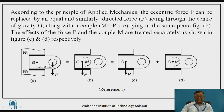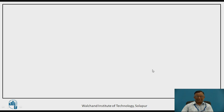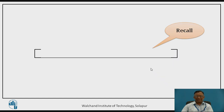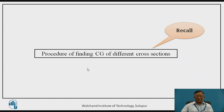This eccentric load is replaced by a direct load P and a couple M acting about the CG, and that is why two types of stresses are induced in the weld section — one because of the direct load P and one because of the moment M. It is very important to locate the CG of different weld cross sections.